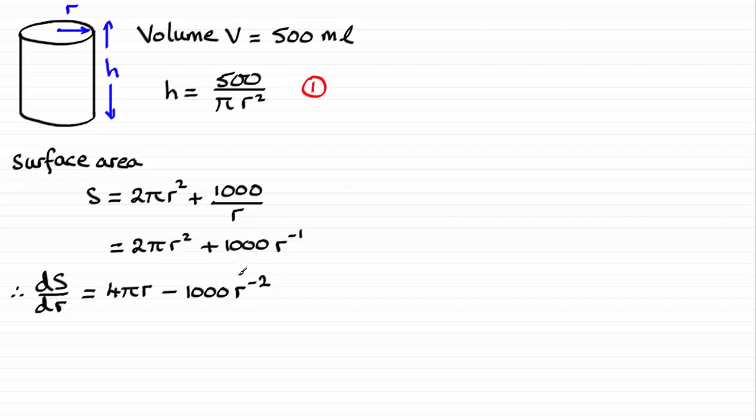And I'm going to change this, rewrite that last term as minus 1000 times 1 over r squared, which is the same as 1000 over r squared.